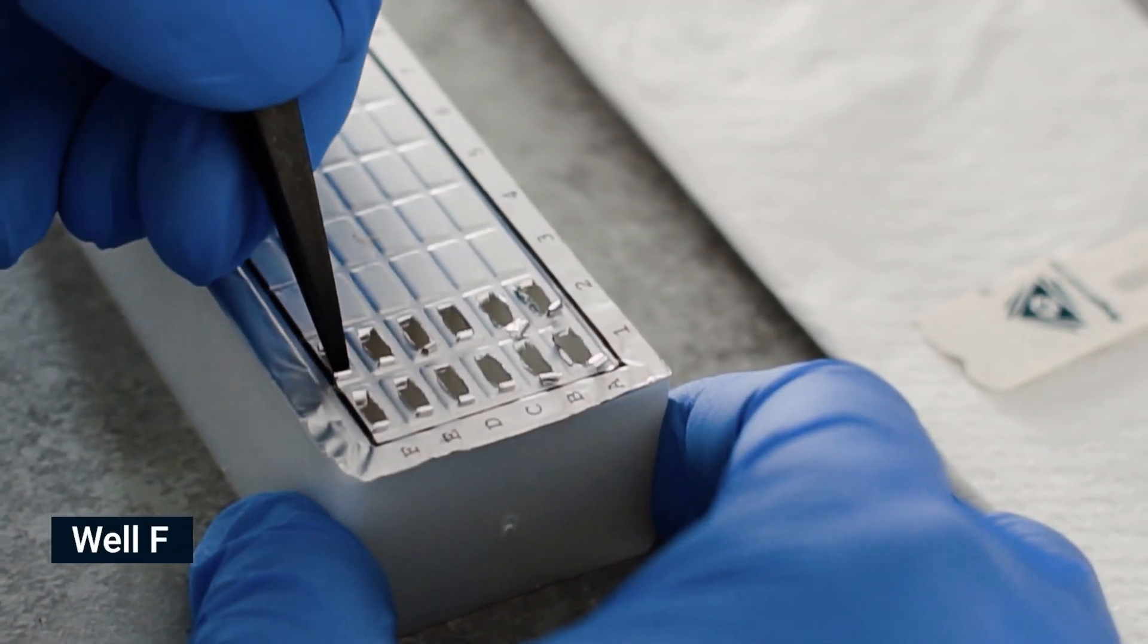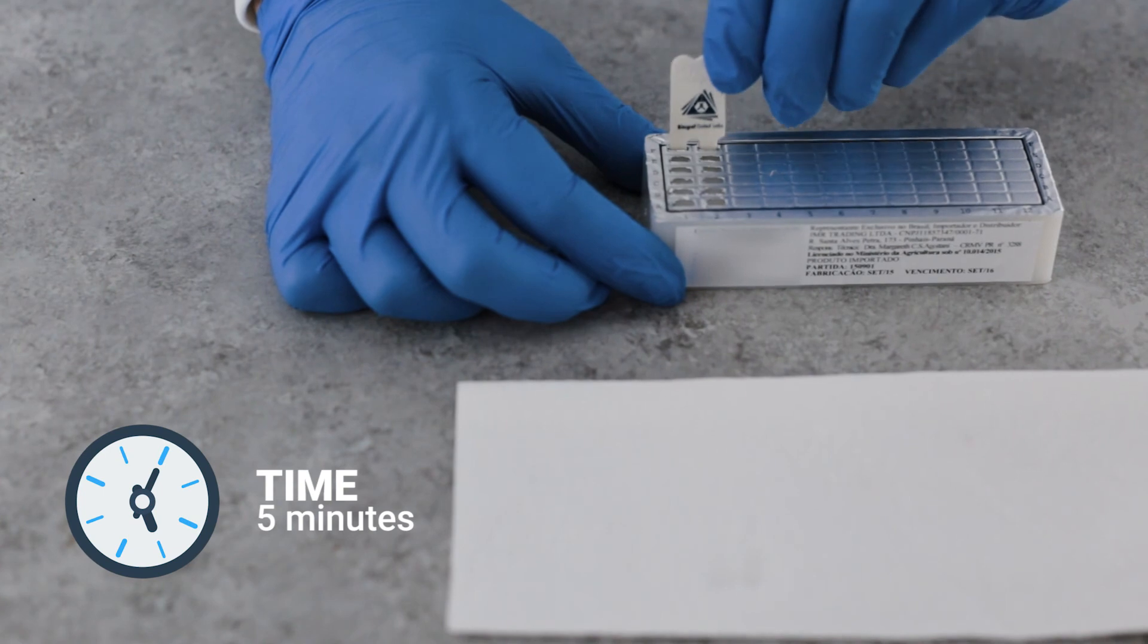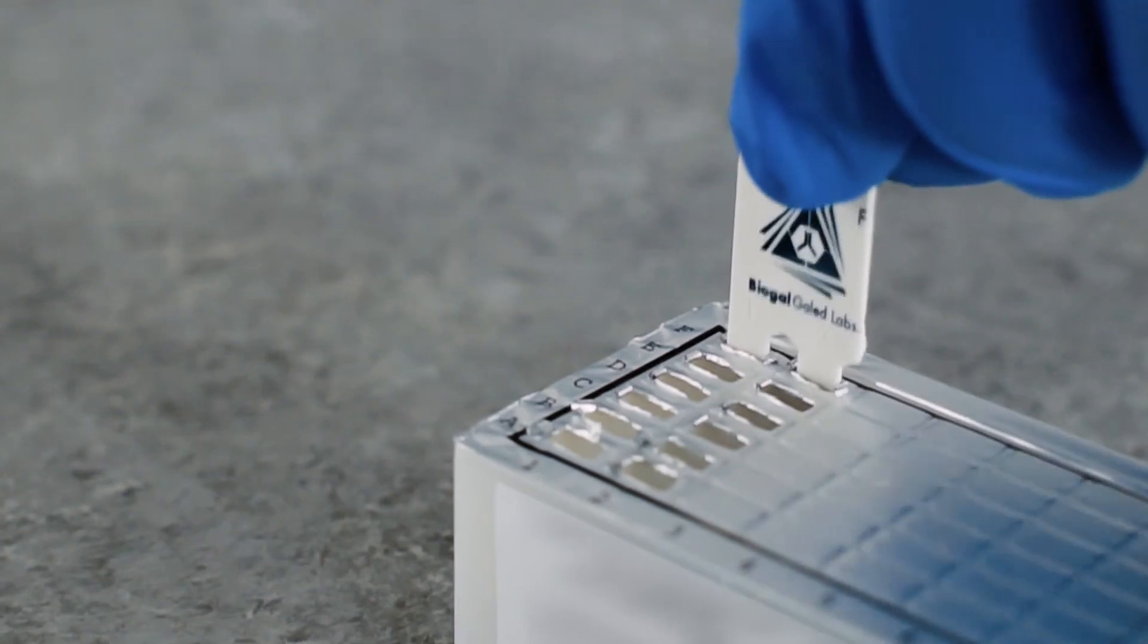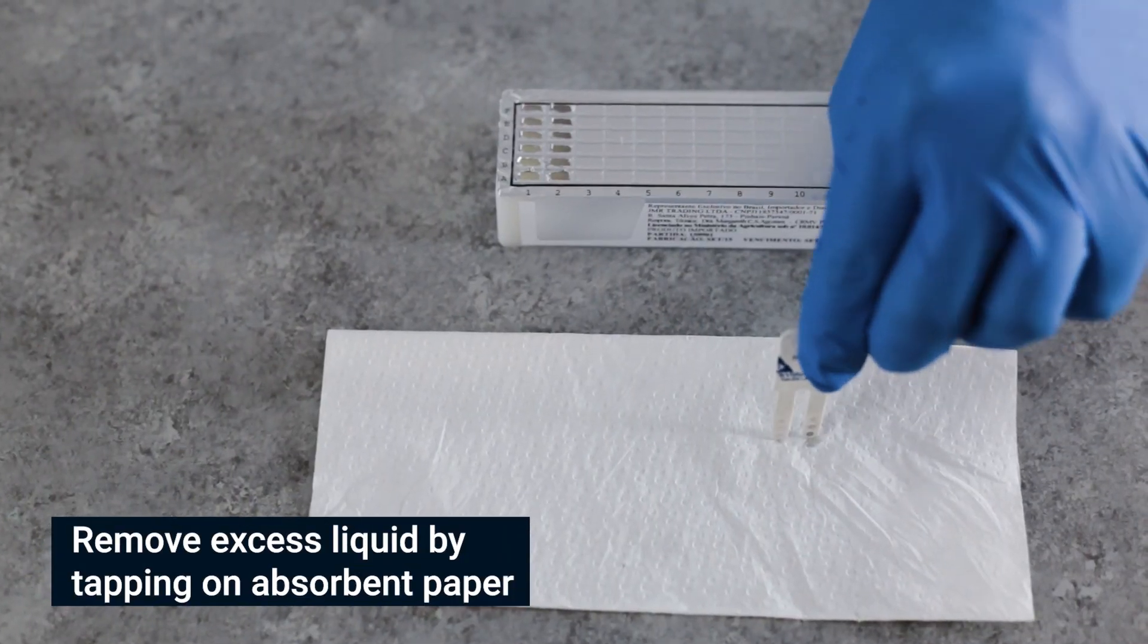Pierce the foil of the next wells in row F. Shake off excess liquid and insert the comb for 5 minutes. Move the teeth at least twice during this step. Remove excess liquid.